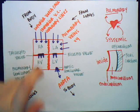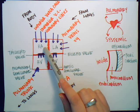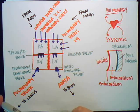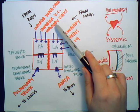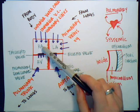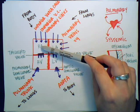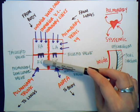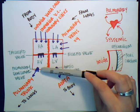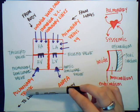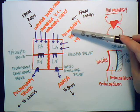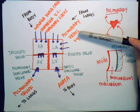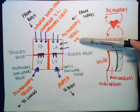One more time from the top: starting at the right atrium, the three incoming vessels are the superior vena cava — delivering blood from structures above the diaphragm — the inferior vena cava — delivering blood from structures below the diaphragm — and the coronary sinus, which delivers blood from the myocardium. From the right atrium through the tricuspid valve into the right ventricle, then through the pulmonary semilunar valve via the pulmonary trunk to the lungs. From the lungs, blood returns through the pulmonary veins — four of them, two from each lung — into the left atrium.